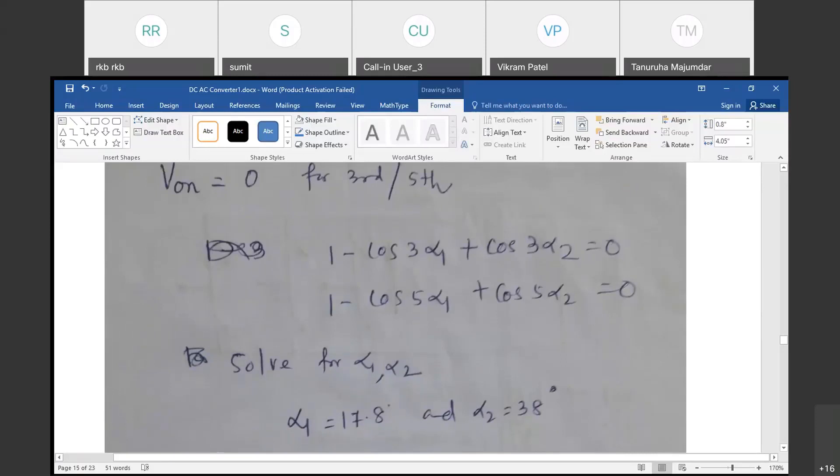1 minus cos 3α1 plus cos 3α2 equals 0, and 1 minus cos 5α1 plus cos 5α2 equals 0. So when you solve these two problems, this equation, this is an iterative method, actually.